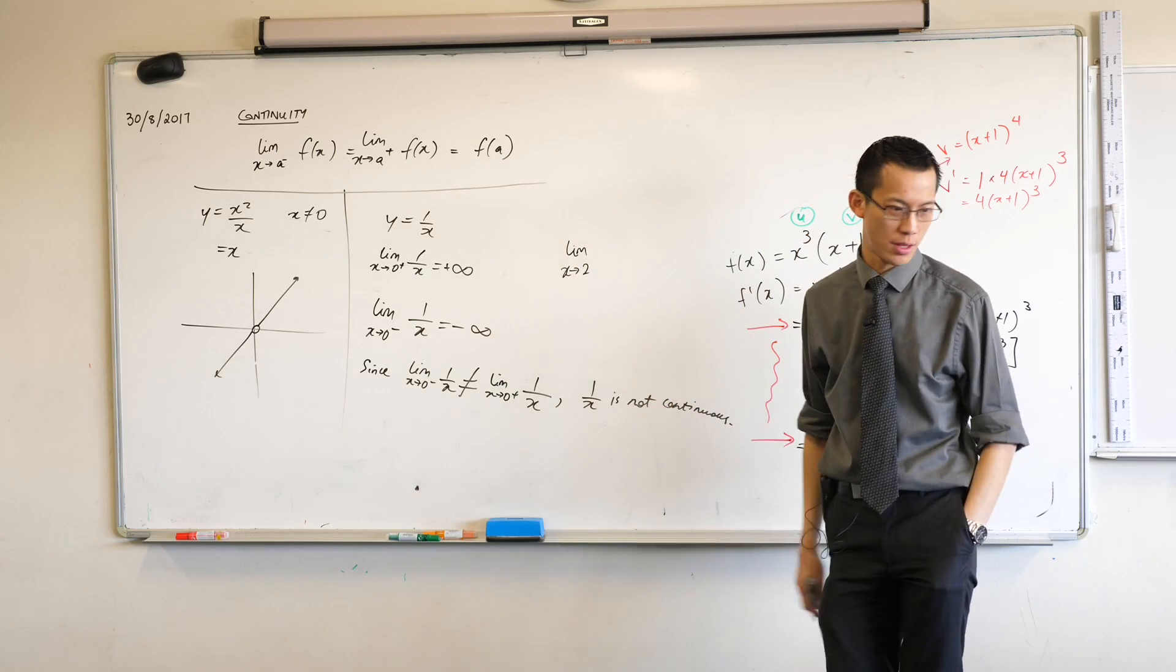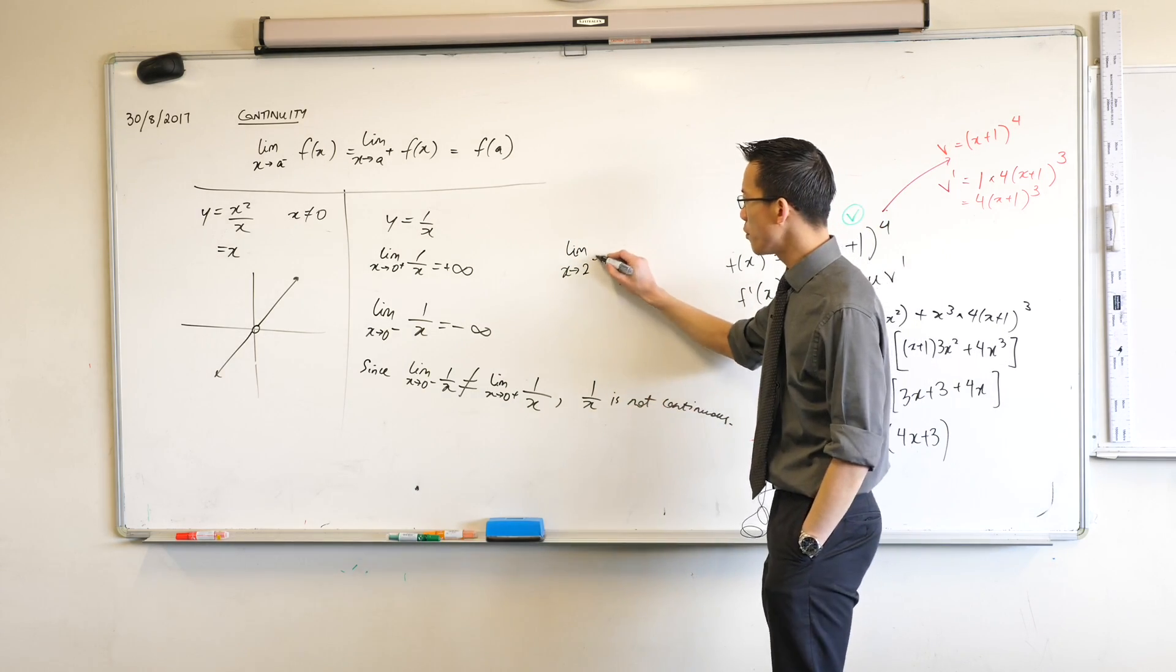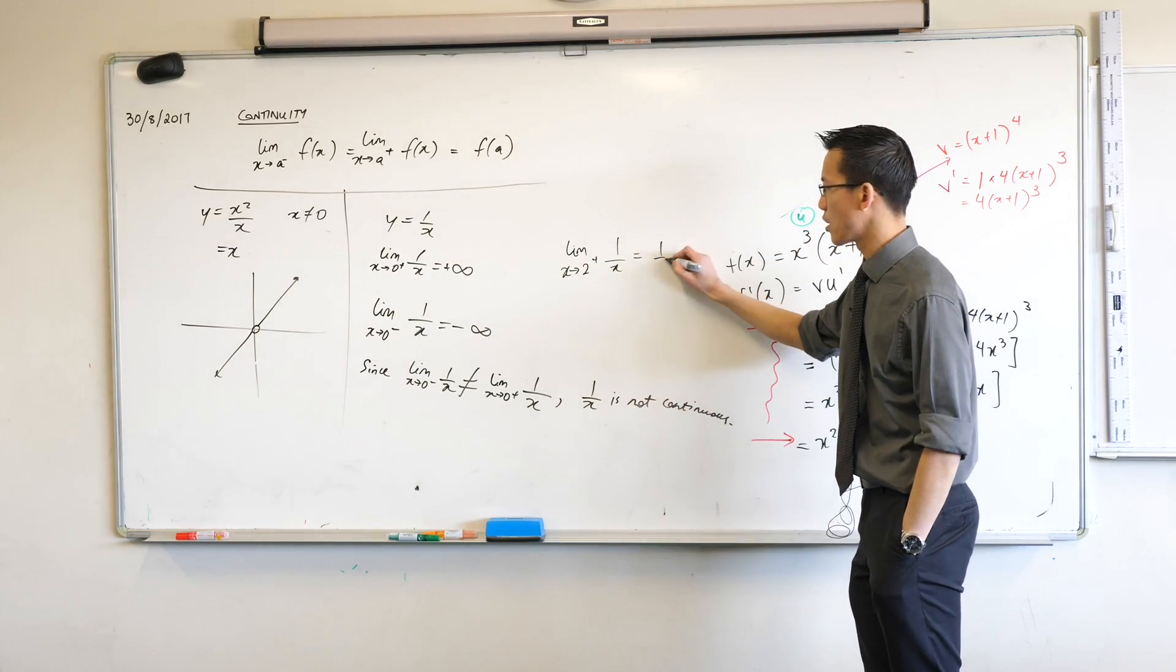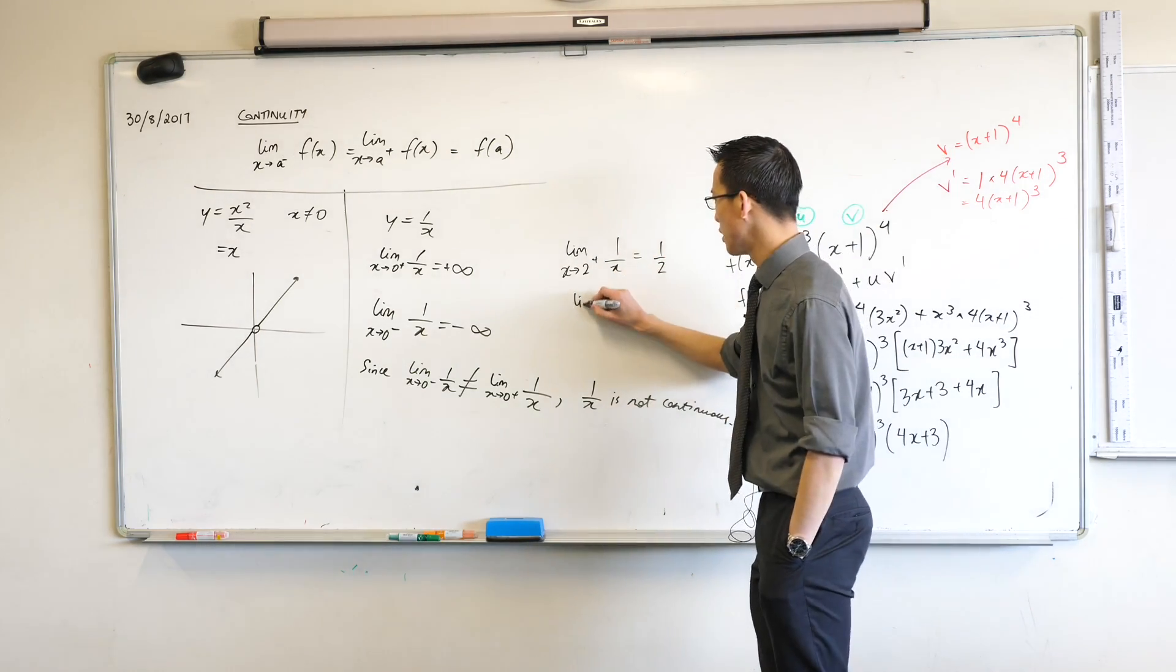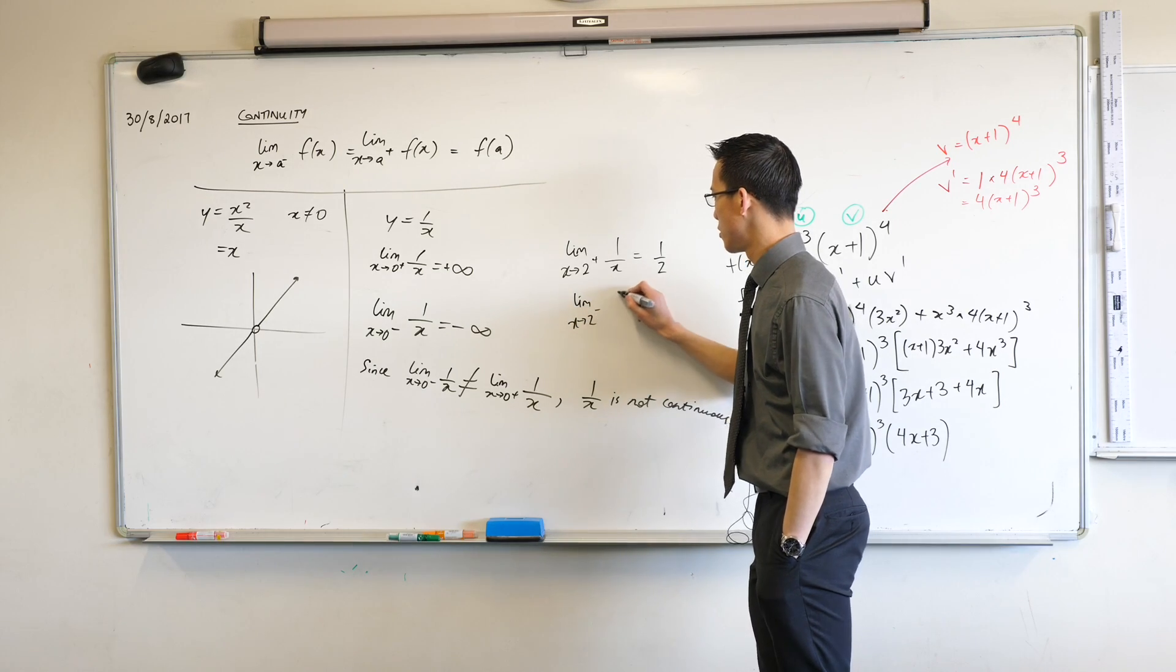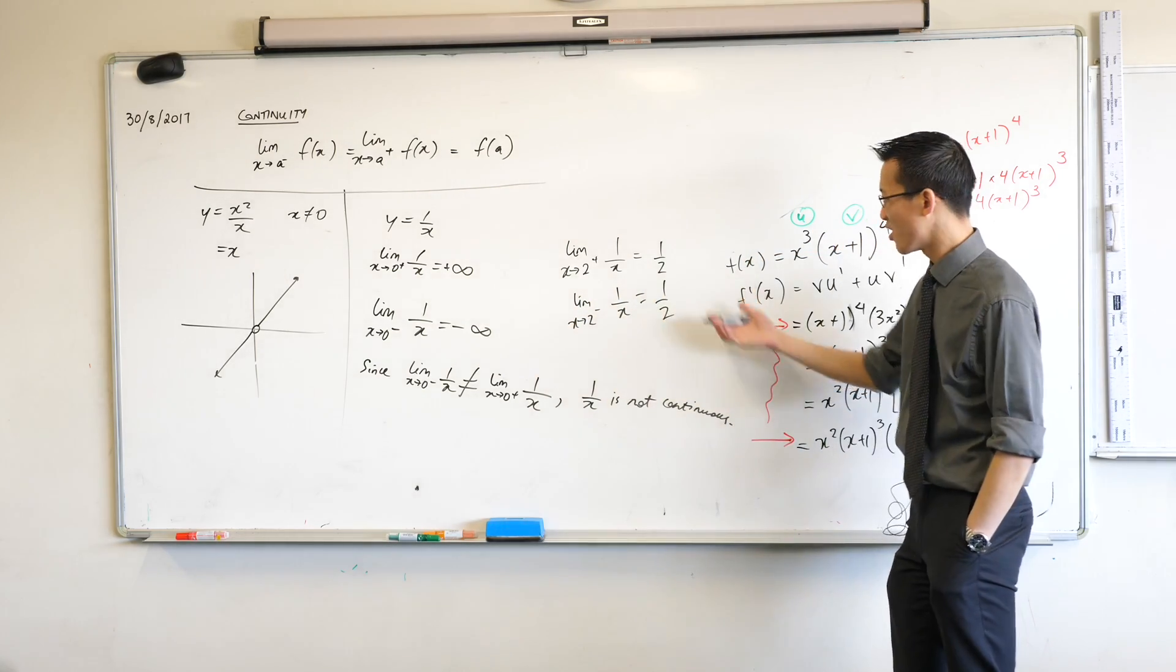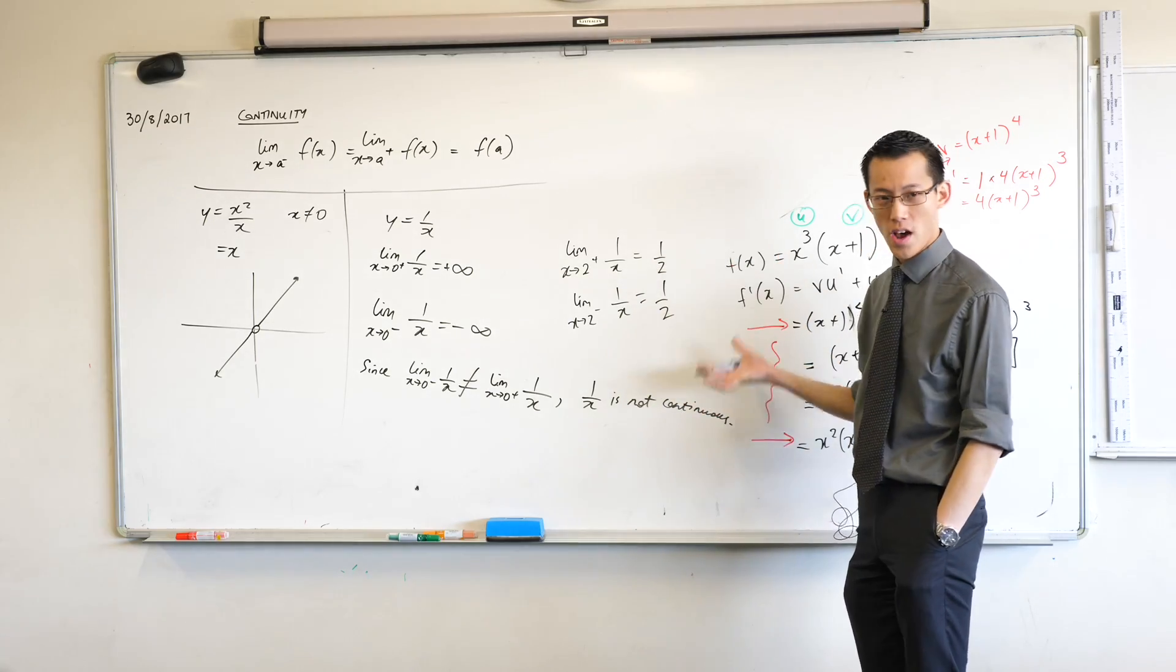For example if I did this whole thing all over again and said hey let's think about what happens when you're going towards 2, the value 2. If you come from the right-hand side what do you approach? The answer is you approach a half. If you come from the left-hand side, guess what? You're still going towards a half. So these two are equal, it's fine.